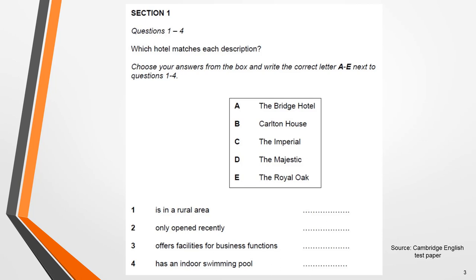Here are a couple of examples from past papers. In this first example, you're given a list of hotel names A to E and the list of features in the hotels 1 to 4. You must listen to the recording and identify which hotel has which feature.